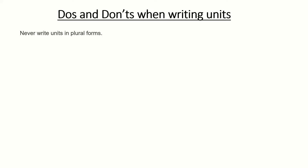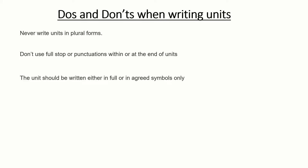Now, what are the do's and don'ts when writing units? You must never write units in plural forms — for instance, kilogram not kilograms, seconds not seconds with an 's'. We also don't use full stops or punctuation within or at the end of units. Lastly, your units should be written either in full or in agreed symbols — not arbitrary abbreviations.